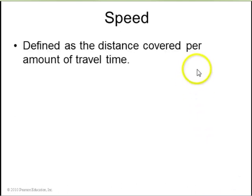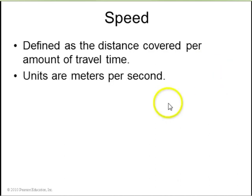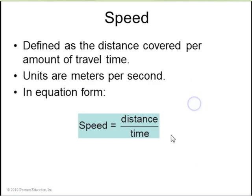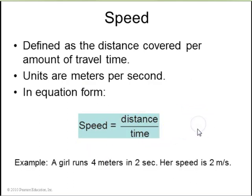Speed is defined as the distance covered per the amount of travel time. The units in SI units are meters per second. The equation here is speed is distance divided by time. Example, if a girl runs 4 meters in 2 seconds, her speed is 2 meters per second. 4 divided by 2 is 2.